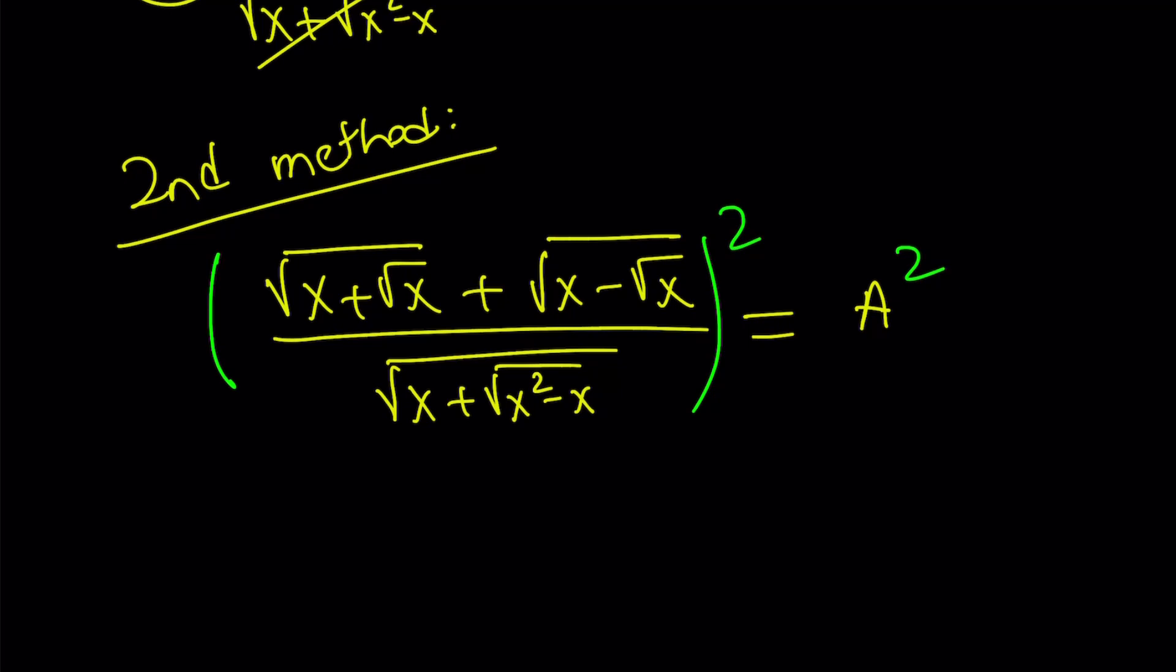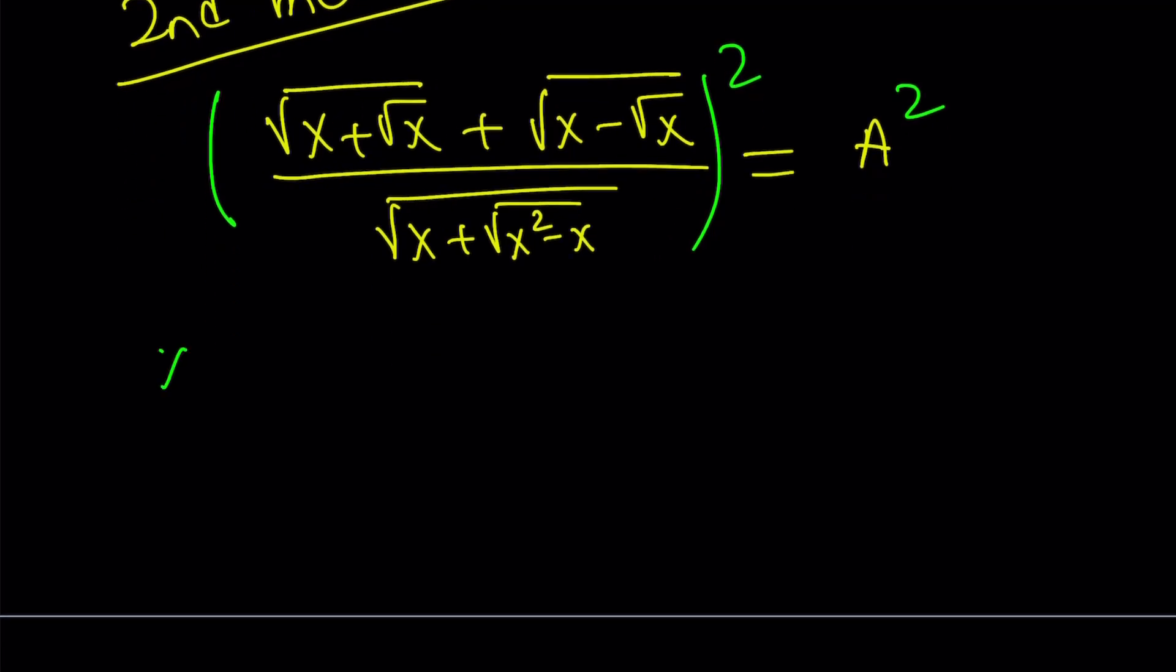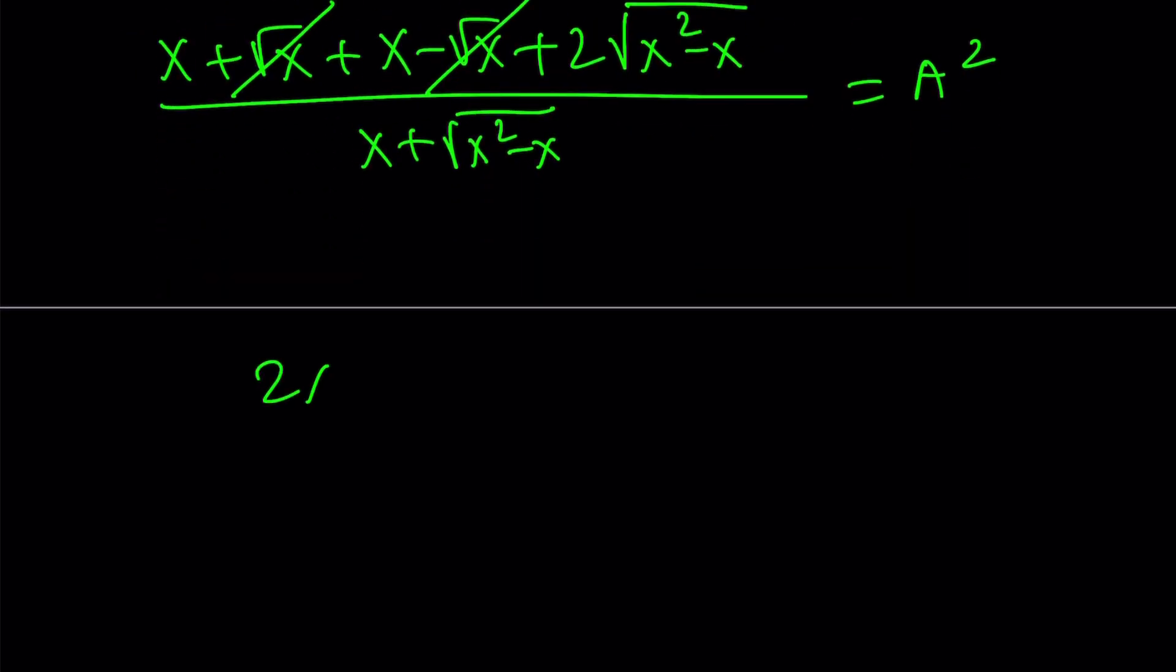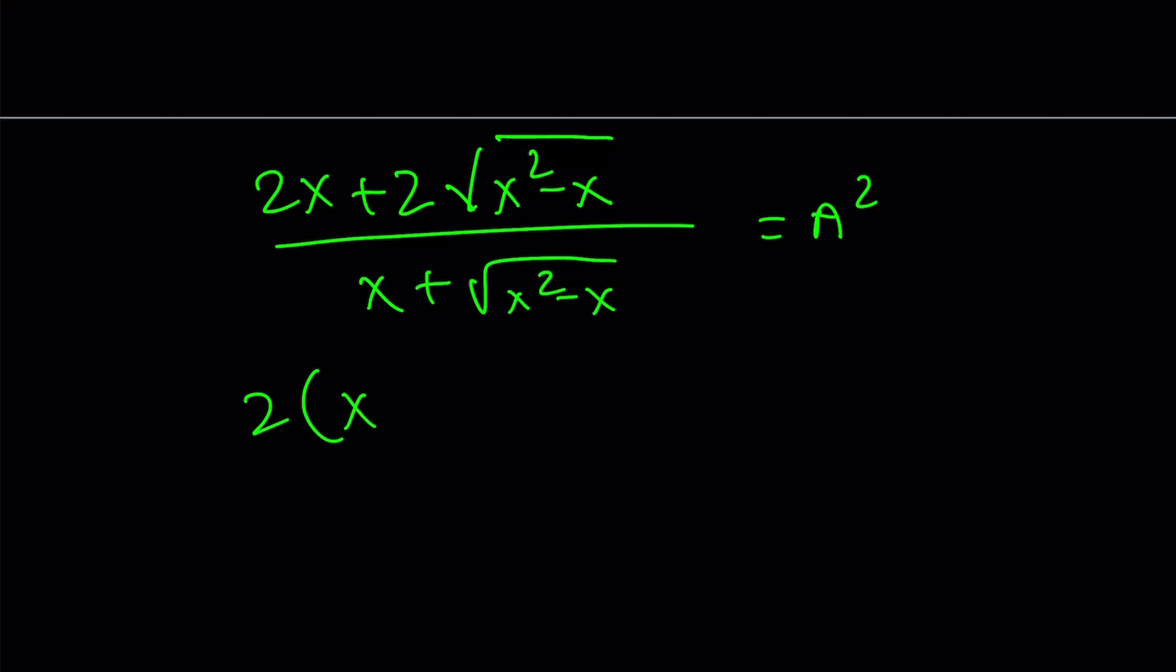If you square both sides here, we get the numerator squared, but you already know that. And the denominator, when squared, is just going to lose the outer square root, and that's going to be the answer. So, let's go ahead and simplify this one more time. The numerator is going to give us 2x plus 2 times the square root of x squared minus x, and that is divided by that. And notice that here we have a squared, and the numerator can be factored. And after factoring, we notice that you can simplify this, and we end up with a squared equals 2.